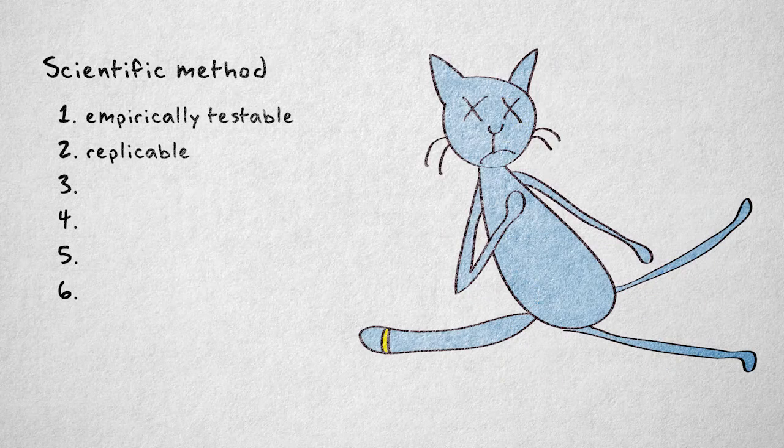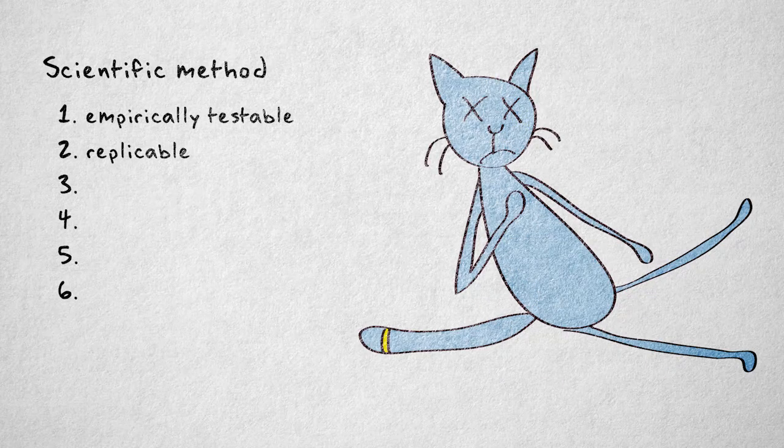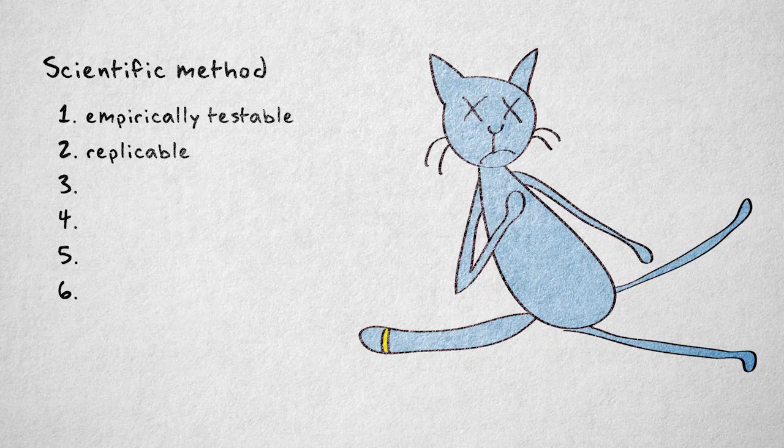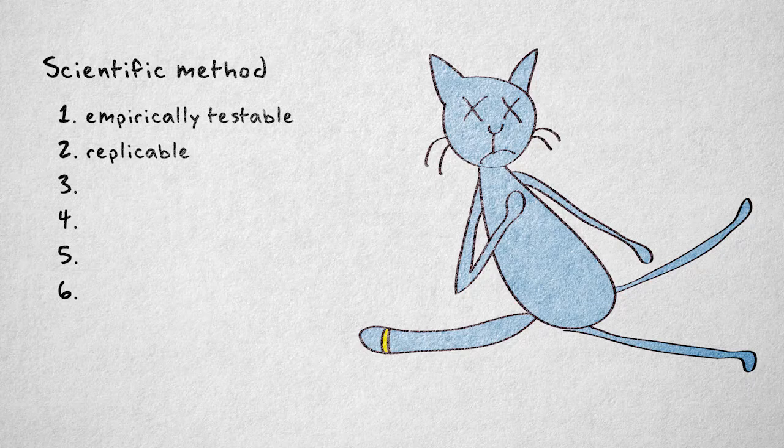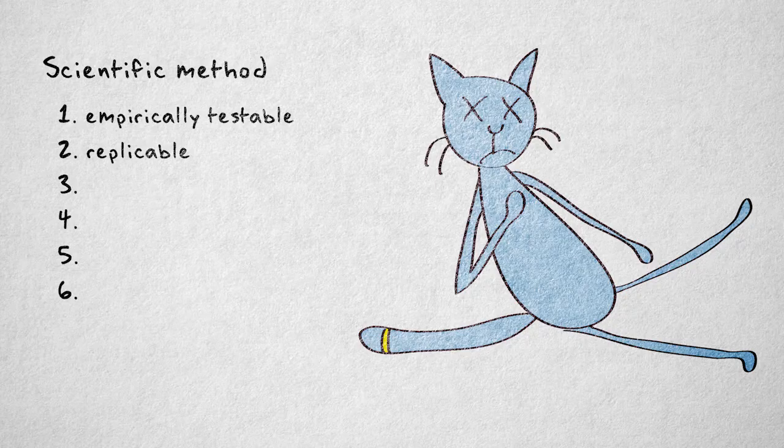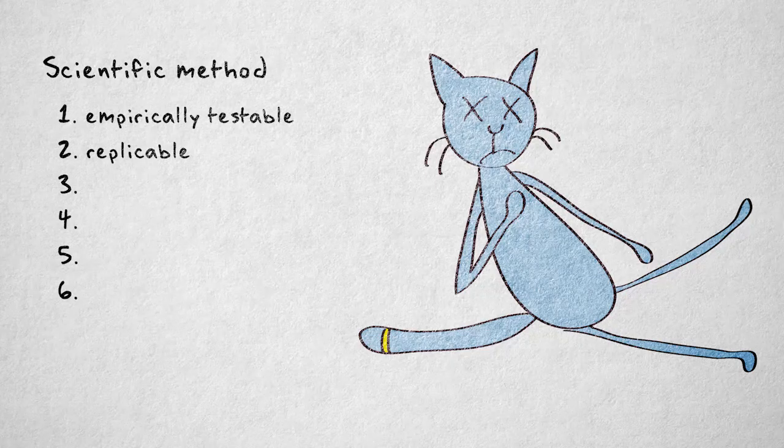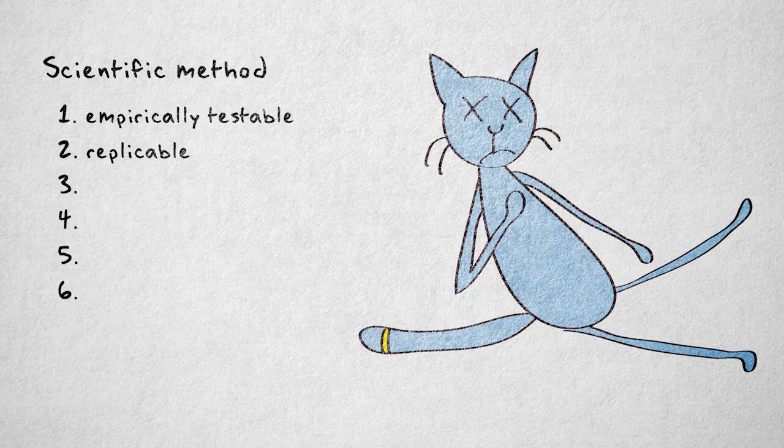But what if the cat dies after the first week of observation? Then we would not be able to check the hypothesis for ourselves. The study is no longer replicable. To see if results replicate, we have to be able to repeat the study as it was originally conducted. Suppose we do something differently and we find different results. Is this a failure to replicate? No, the failed replication could be caused by our change in procedure.